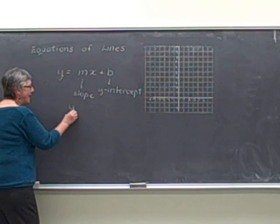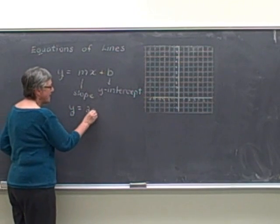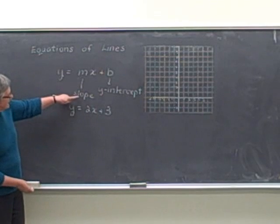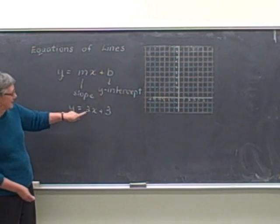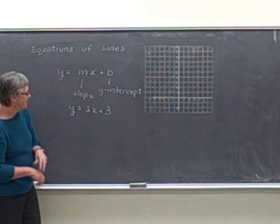Let's look at an example, y equals 2x plus 3. So in this equation, the slope is the coefficient of the x, the 2, and the y-intercept is the 3.